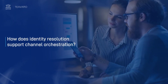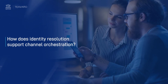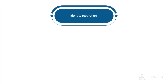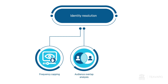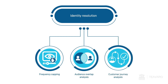This video answers the question: how does identity resolution support channel orchestration? Identity resolution supports cross-channel orchestration through frequency capping, audience overlap analysis, and customer journey analysis.